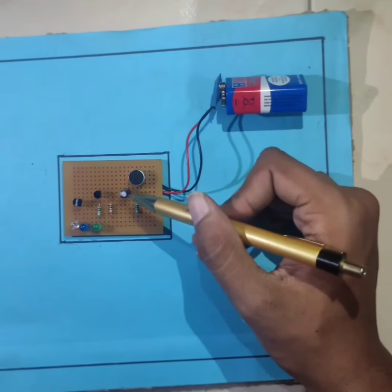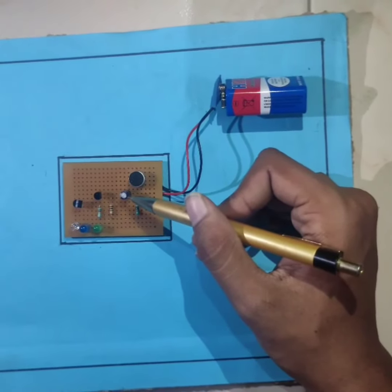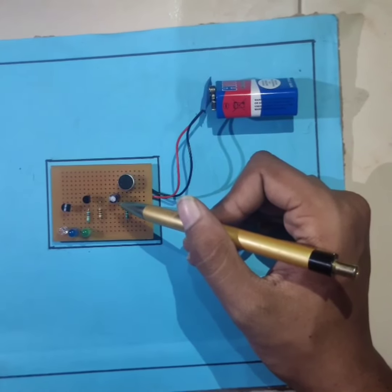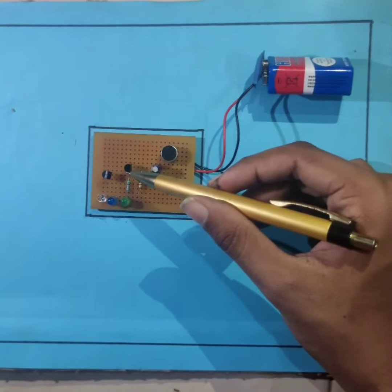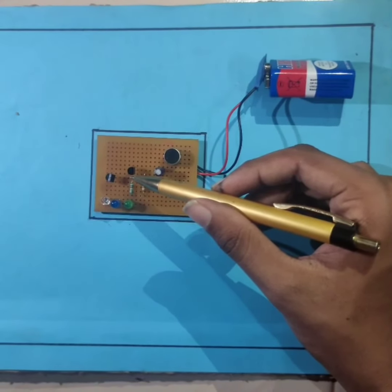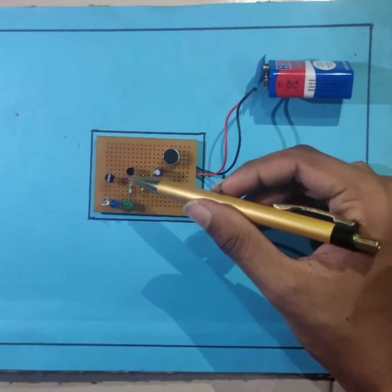Second, it is known as capacitor, it's of 100 UF. Here it does the work of filtering unwanted frequency. Third, these are two transistors, which command whether LED should be in on or off condition.